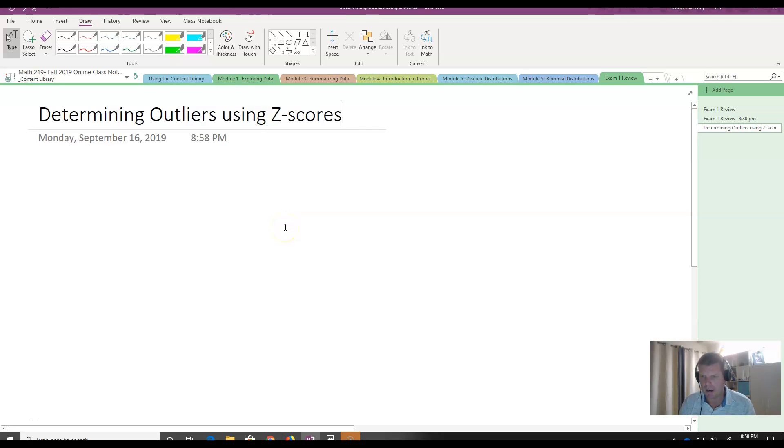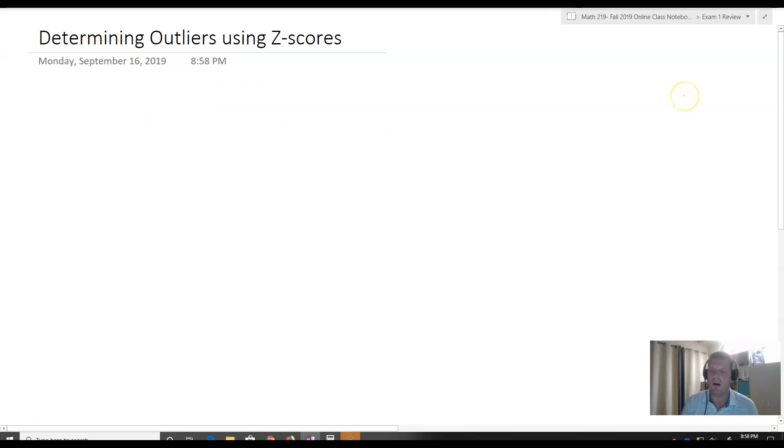There are two ways to determine outliers in statistics: one is utilizing the IQR, and the other is utilizing standard deviation and z-scores. What we're going to go over in this video is how to determine outliers based upon the use of z-scores.